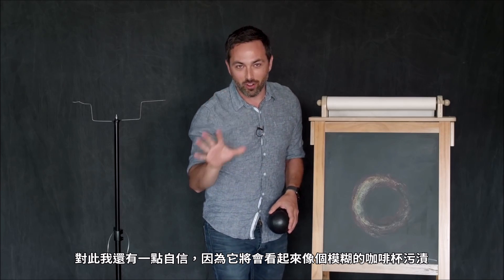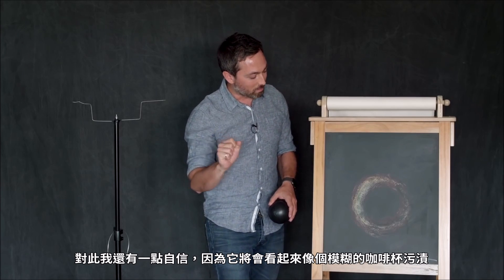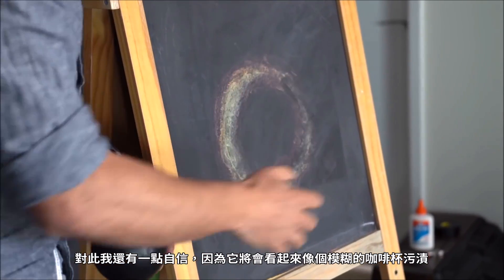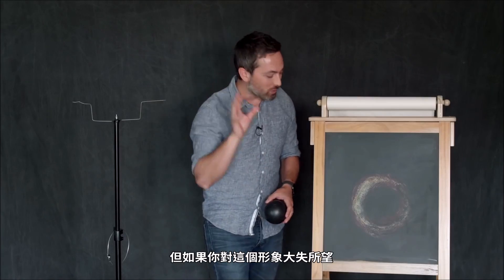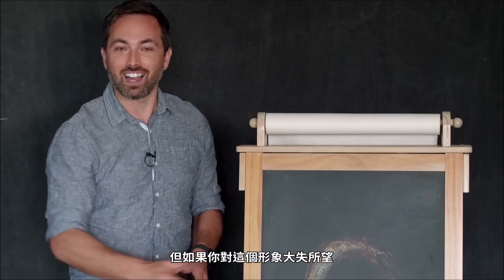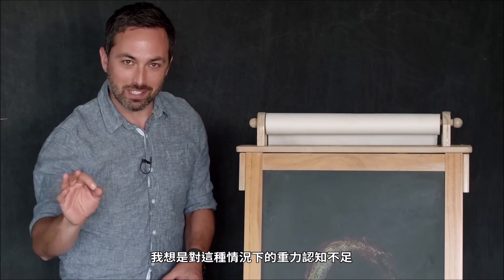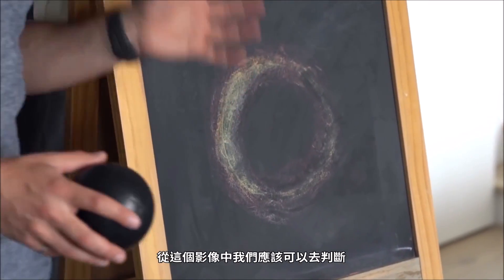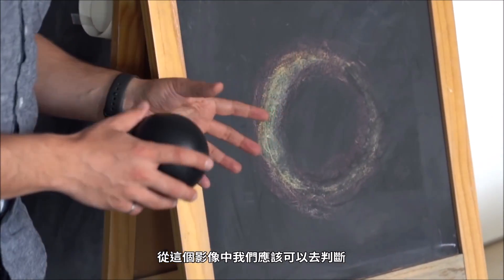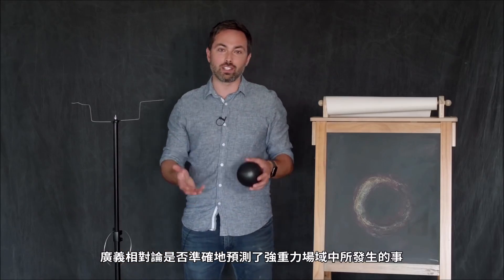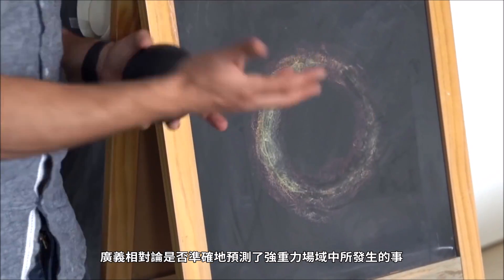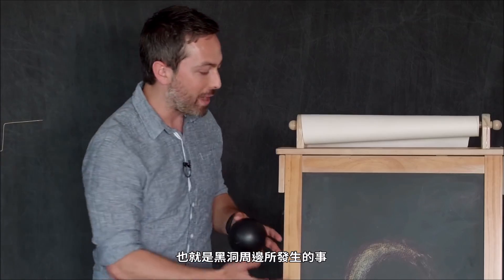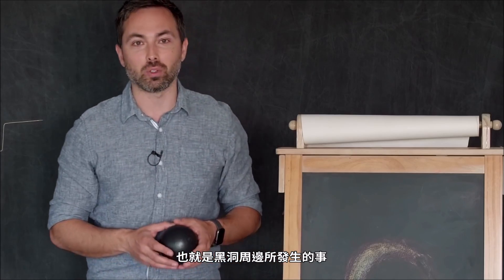I can be relatively confident because it's going to look a bit like a fuzzy coffee mug stain. But if you are disappointed by this image, I think that misses the gravity of the situation. From this image, we should be able to tell whether the general theory of relativity accurately predicts what happens in the strong gravity regime — that is, what happens around a black hole.